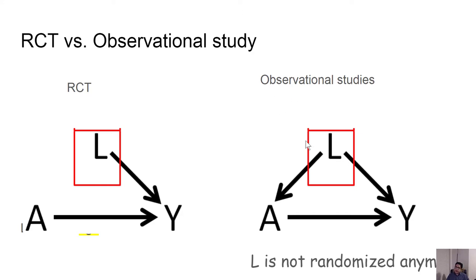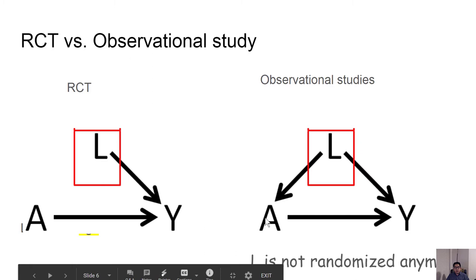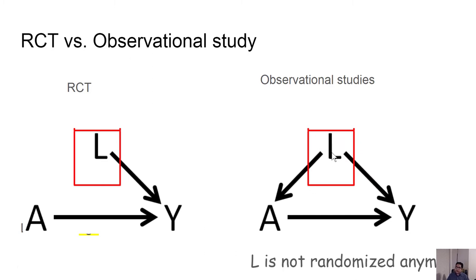But the problem is we do not have the luxury of randomization anymore. The link between L and A will be there when we are analyzing the observational dataset. That means age will be a determining factor for a person to be in the rheumatoid arthritis group or not, and then this L or age will also be a determining factor for having heart attack or not.